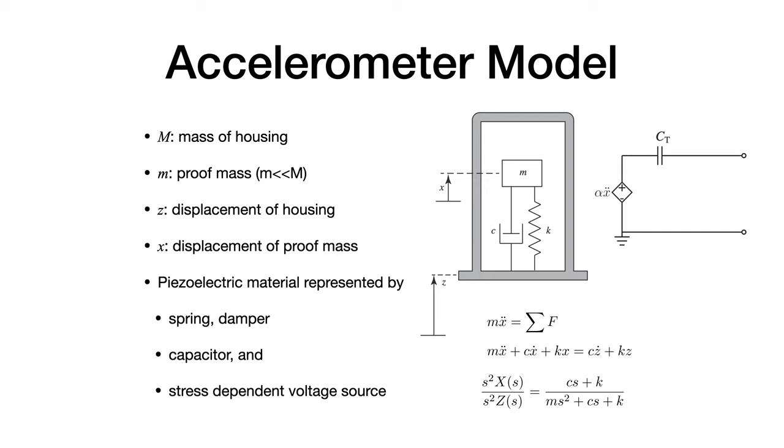I mentioned that the voltage source in the circuit on the right is stress-dependent. The stress we can see in the first equation would be proportional to the net force from the spring and the damper. Because the net force is proportional to acceleration, the voltage is proportional to the acceleration as well.